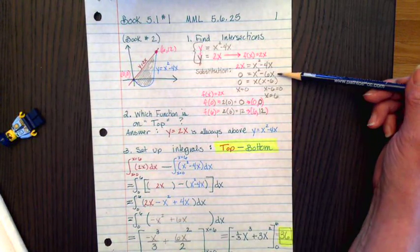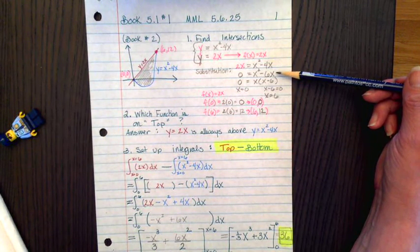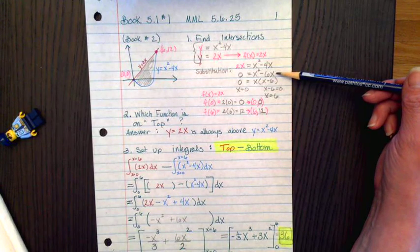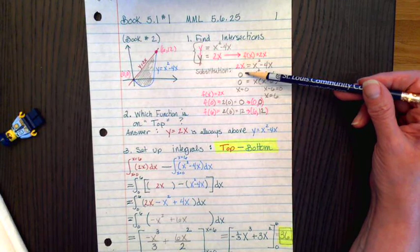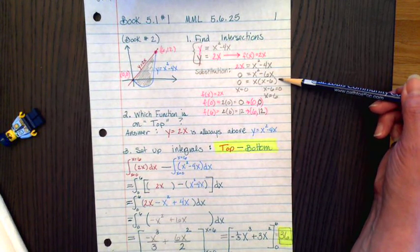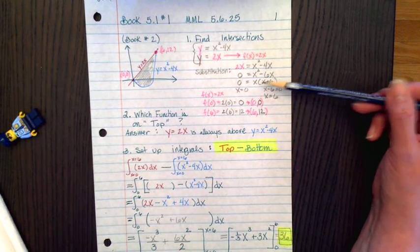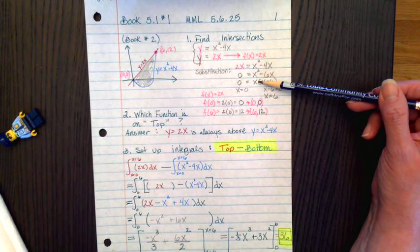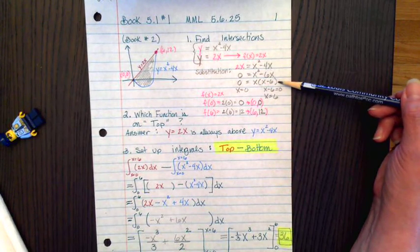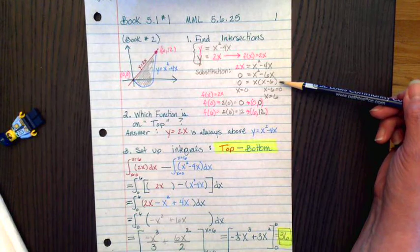When we subtract 2x from both sides, we get a quadratic equation, x squared minus 6x. We solve that quadratic equation by setting it equal to 0, factoring. If factoring didn't work, we could use the quadratic formula. But when we solve this, we get x equals 0 or x equals positive 6.